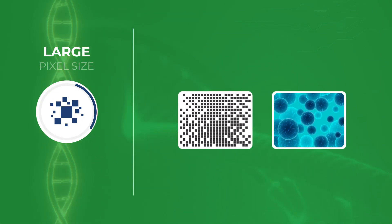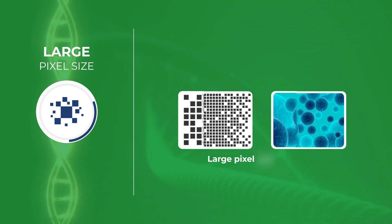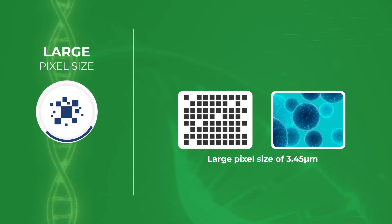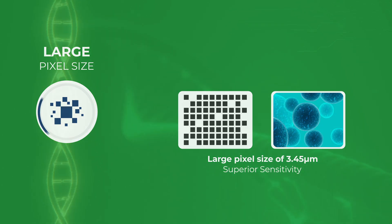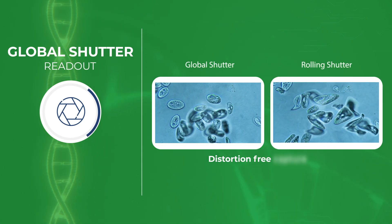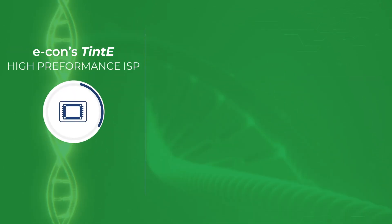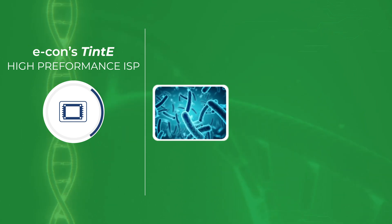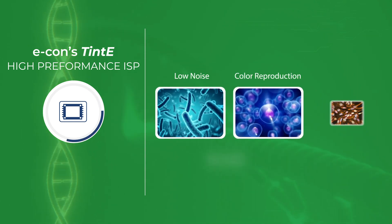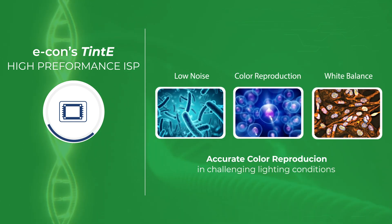It has back-illuminated pixel technology and a large pixel size of 3.45 micrometers for superior sensitivity, along with global shutter readout for distortion-free capture of fast-moving targets. The camera's advanced sensor with Econ's high-performance ISP ensures noiseless and accurate color reproduction even in challenging lighting conditions.